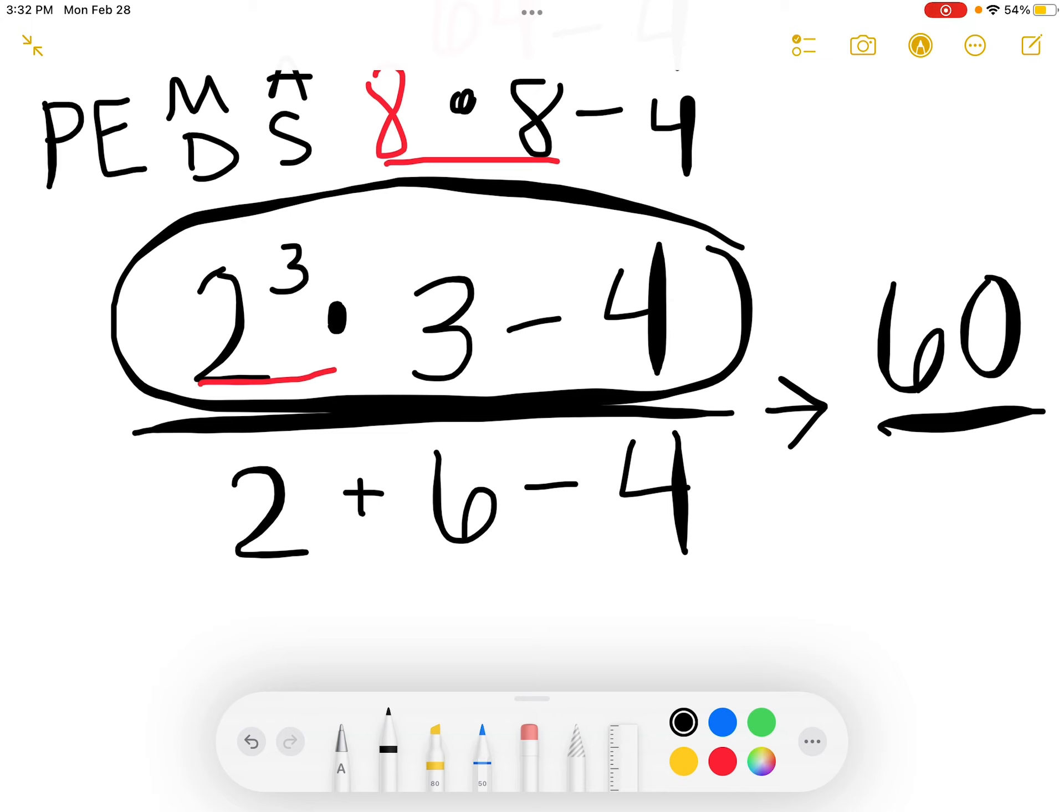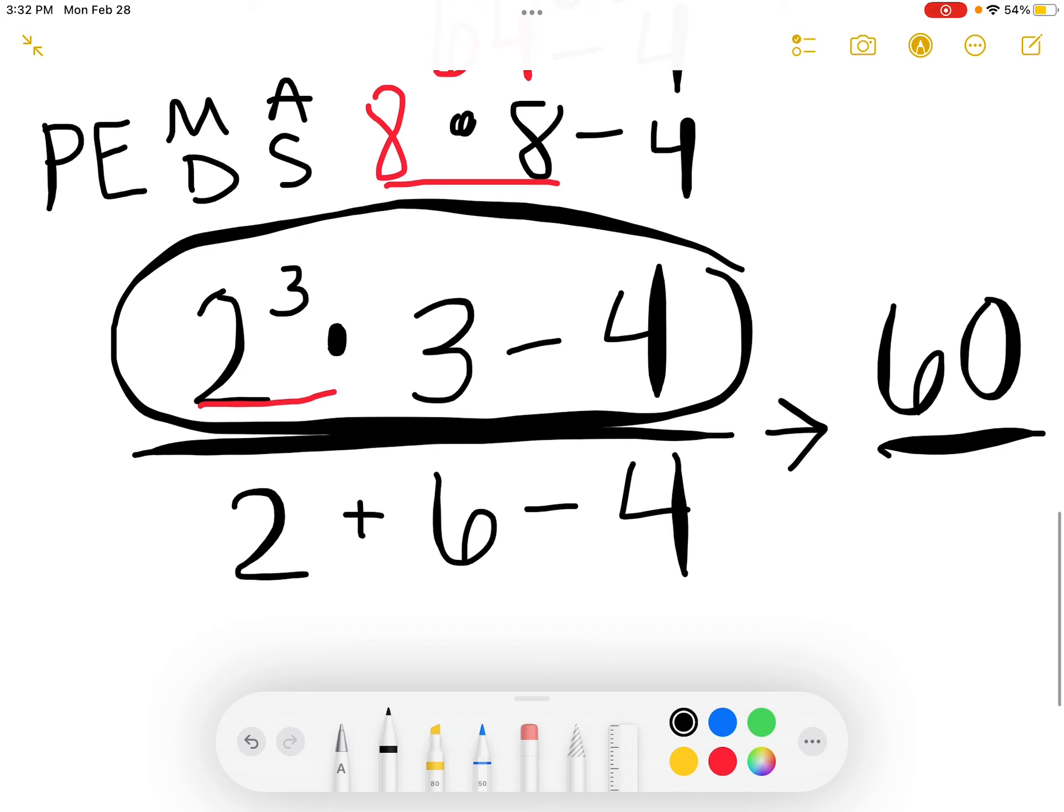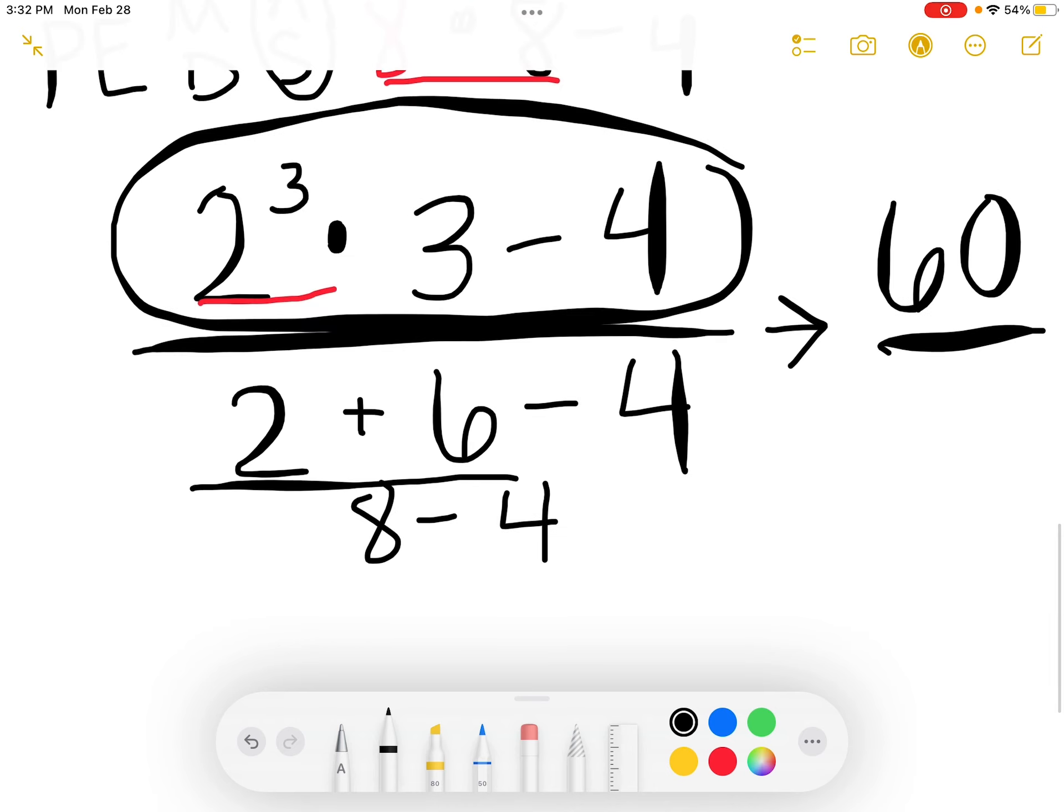For the bottom of our fraction, we're going to follow PEMDAS again. You'll notice we only have addition and subtraction. Which one should we do first? Whichever one shows up first. Because addition and subtraction share that step, so it's whichever one appears first from left to right. 2 plus 6 gives us 8. And 8 minus 4, when we bring down that minus 4, gives us 4. That means the bottom of our fraction became a 4.